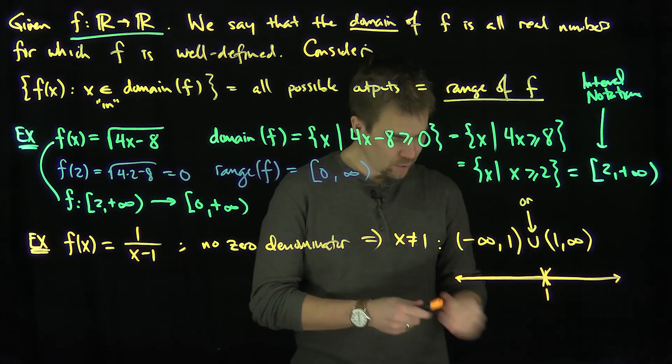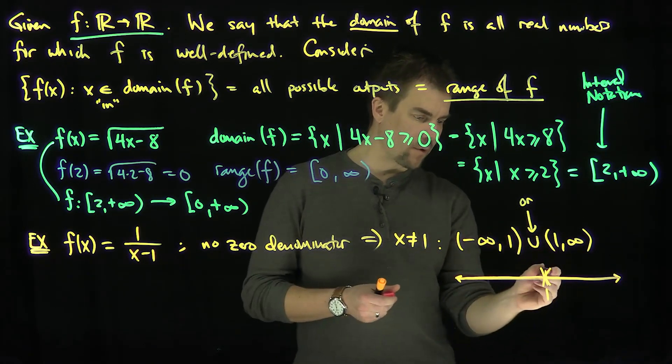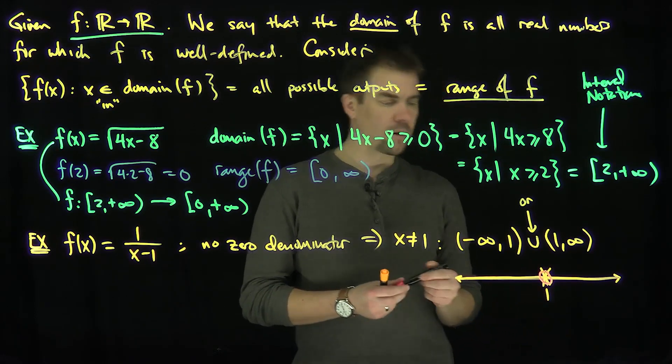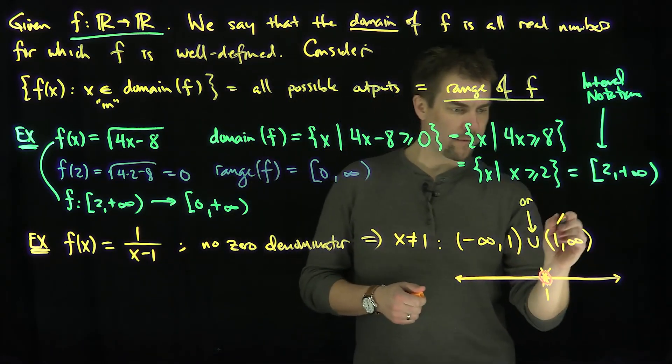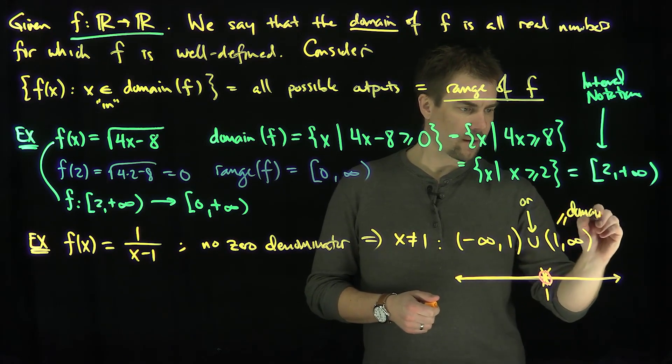So only 1 is excluded from my domain, so my domain is every real number except for the number x equals 1. So that's our domain, the domain of this function f.